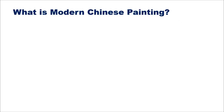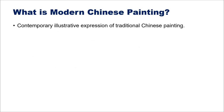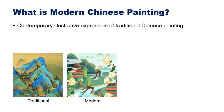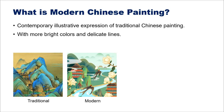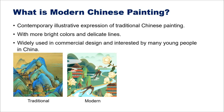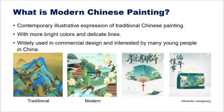First, let me introduce the definition of modern Chinese paintings. Modern Chinese paintings are a contemporary illustrative expression of traditional Chinese paintings. Here is an example to show you the difference. Compared to the traditional ones, modern Chinese paintings feature more bright colors and delicate lights. Paintings with such style are currently widely used in commercial design and are of interest to many young people in China.